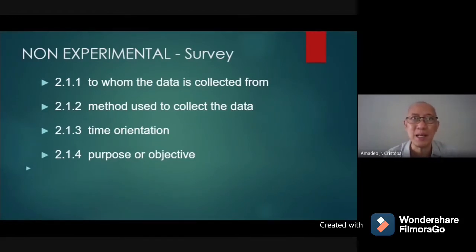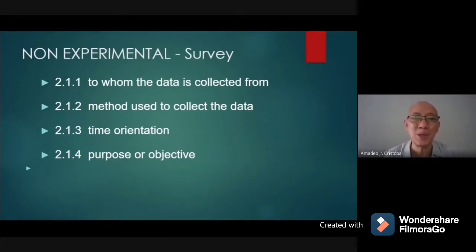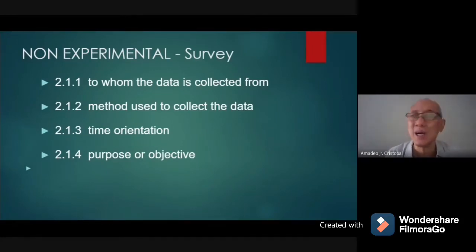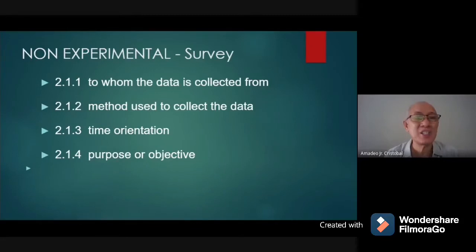You can get data from a small group or a bigger group. In quantitative data, the minimum is 30 elements. So if the total population is 1,000, you can have at least 30, or 10 percent, or 20 percent — it is up to you. The next consideration is the method used to collect the data: how are you going to collect it?